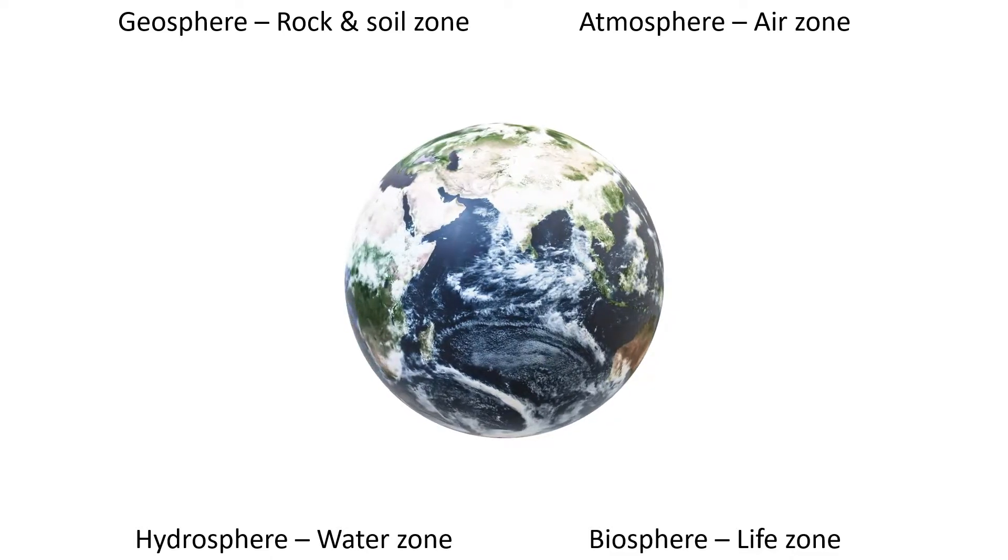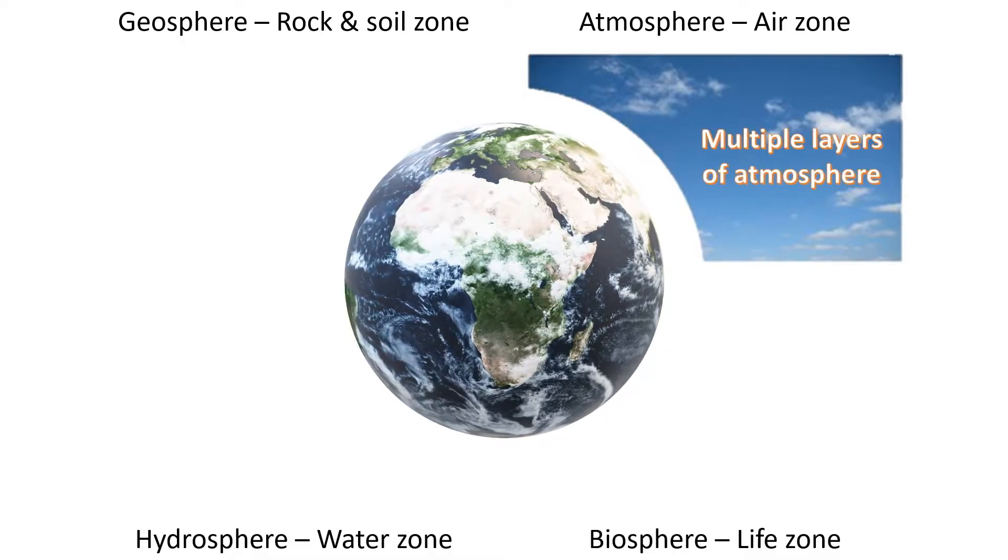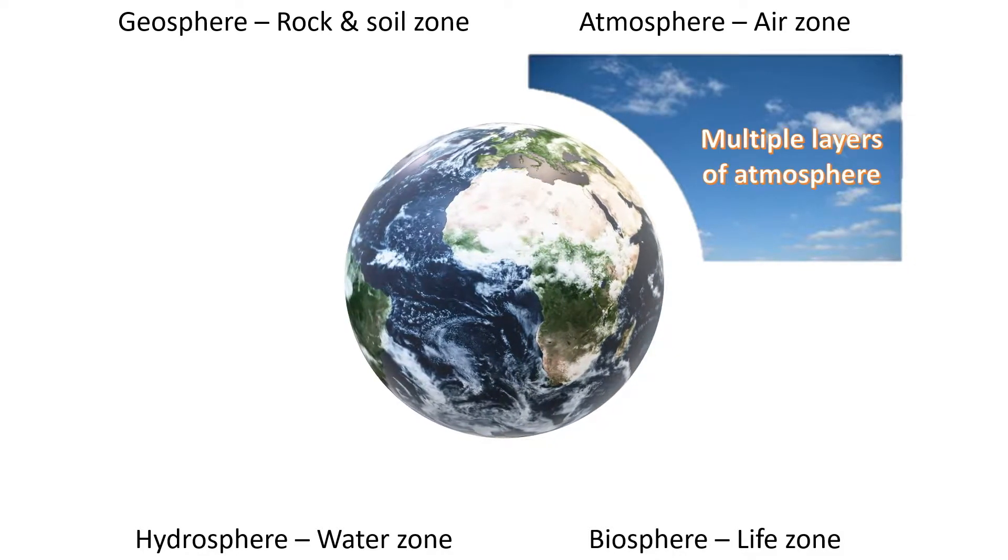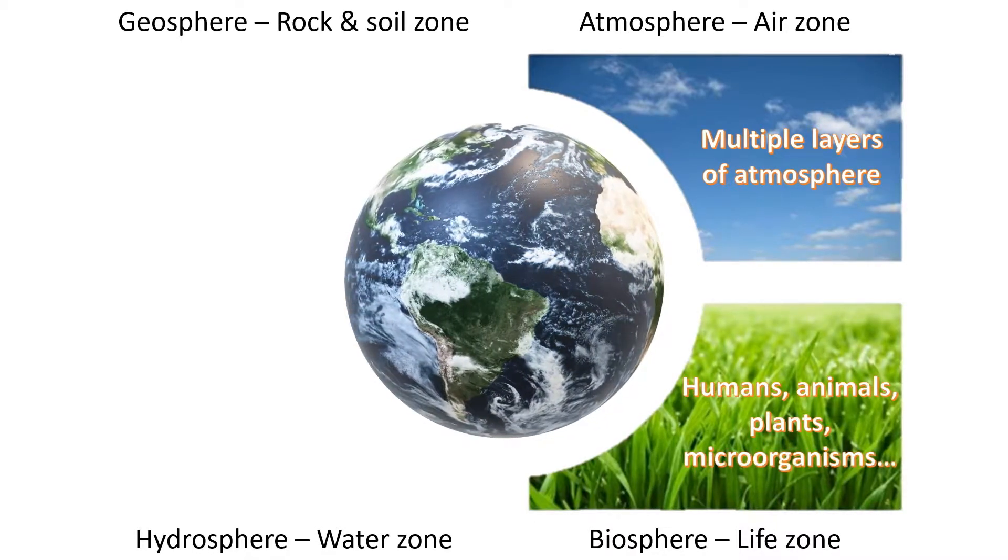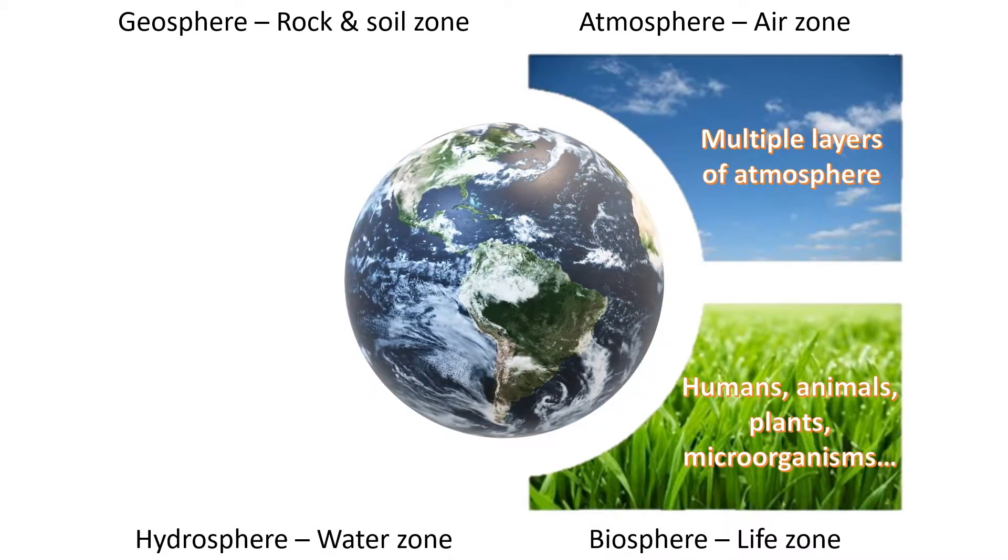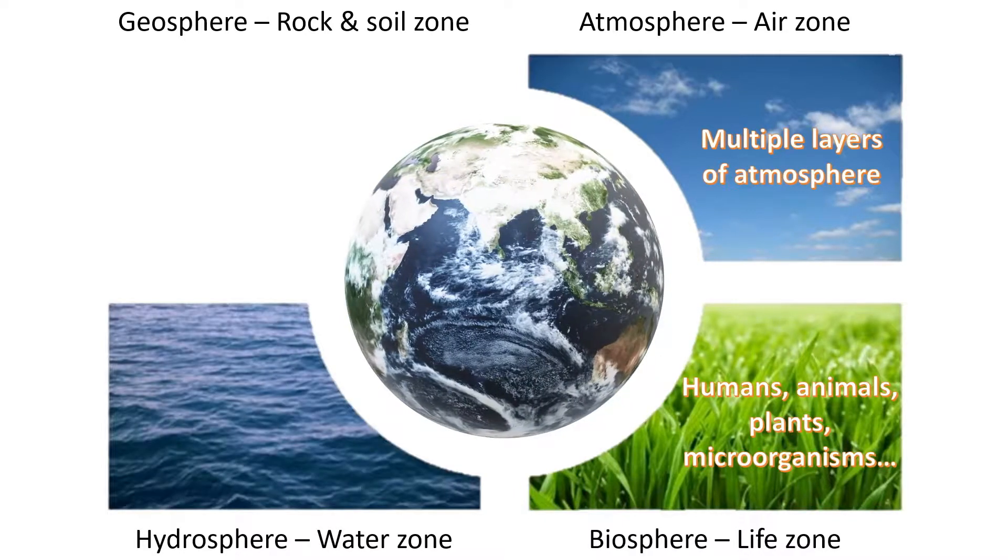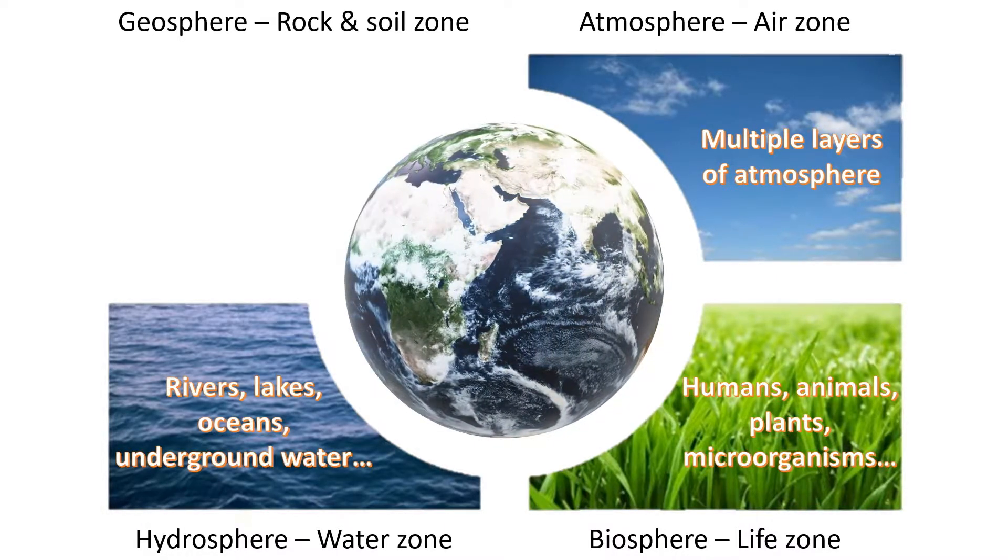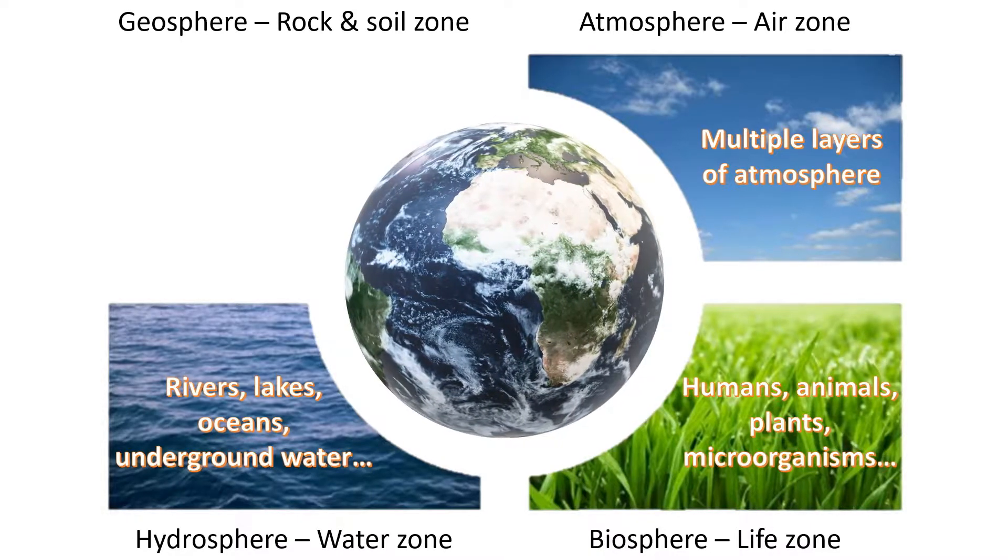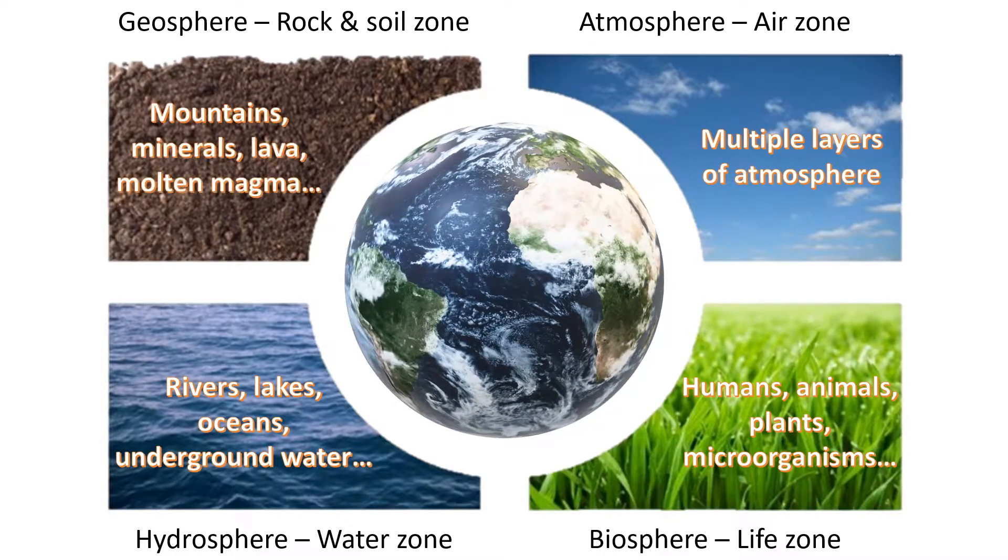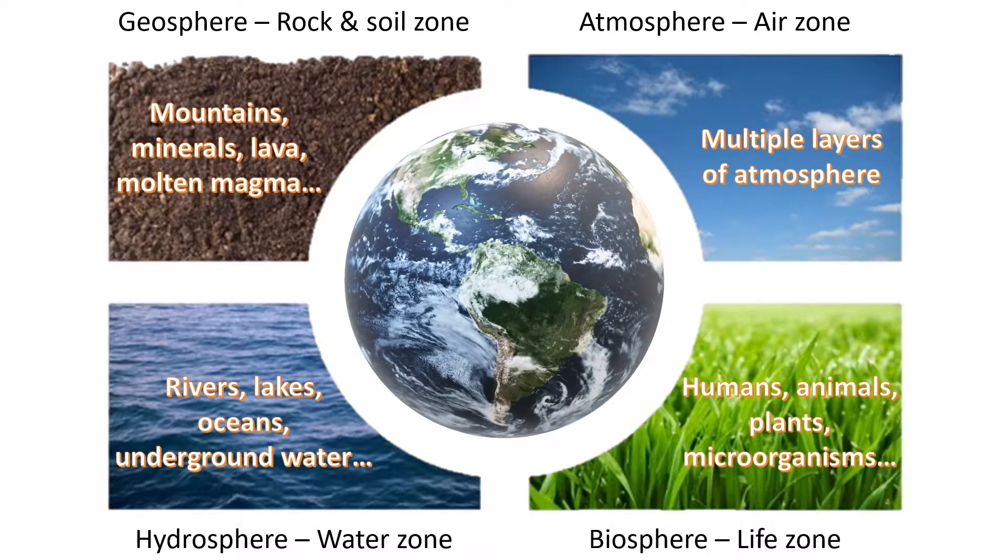To make it easier to understand the spheres, let us look at some examples. In atmosphere, the air zone, we are referring to the multiple layers of our atmosphere. Next, the biosphere, life zone, includes humans, animals, plants, microorganisms, basically all the living things on Earth. Hydrosphere, the water zone, includes rivers, lakes, oceans, underground water, everything related to water. Finally geosphere, we have mountains, minerals, lava, as well as the molten magma underground.